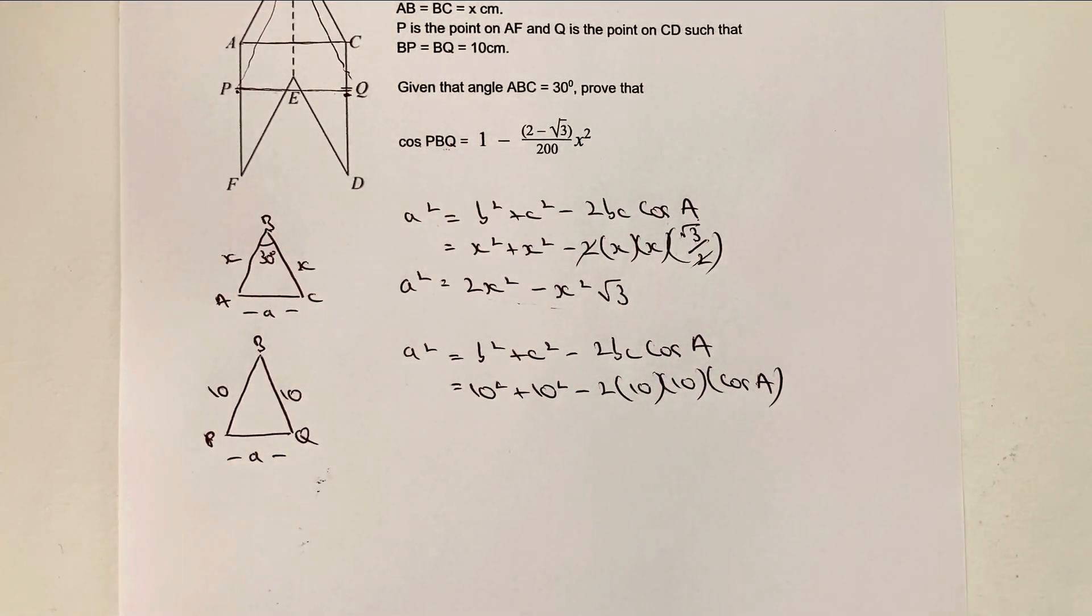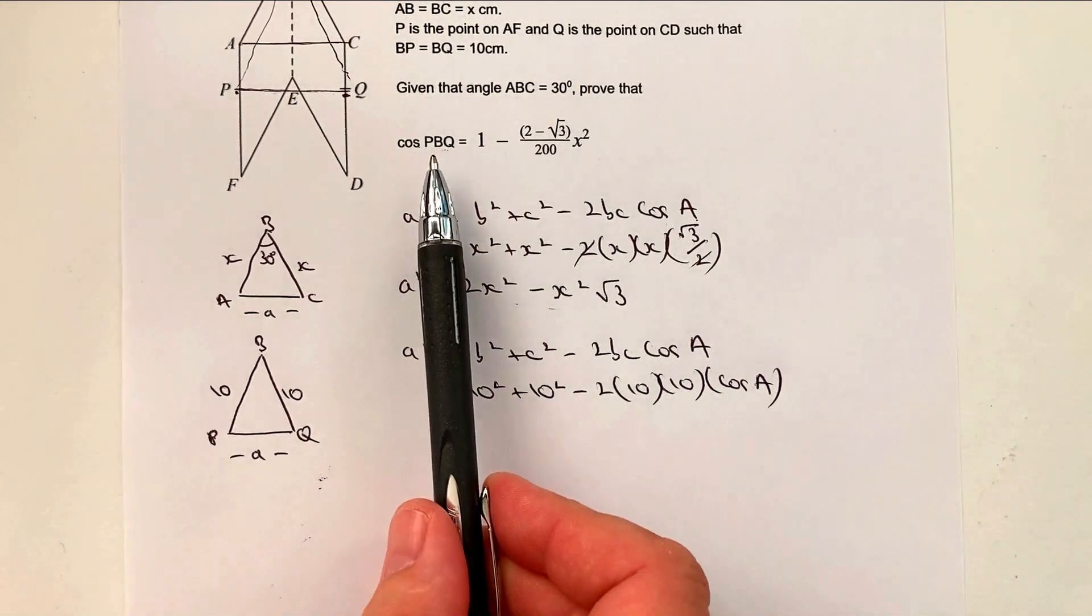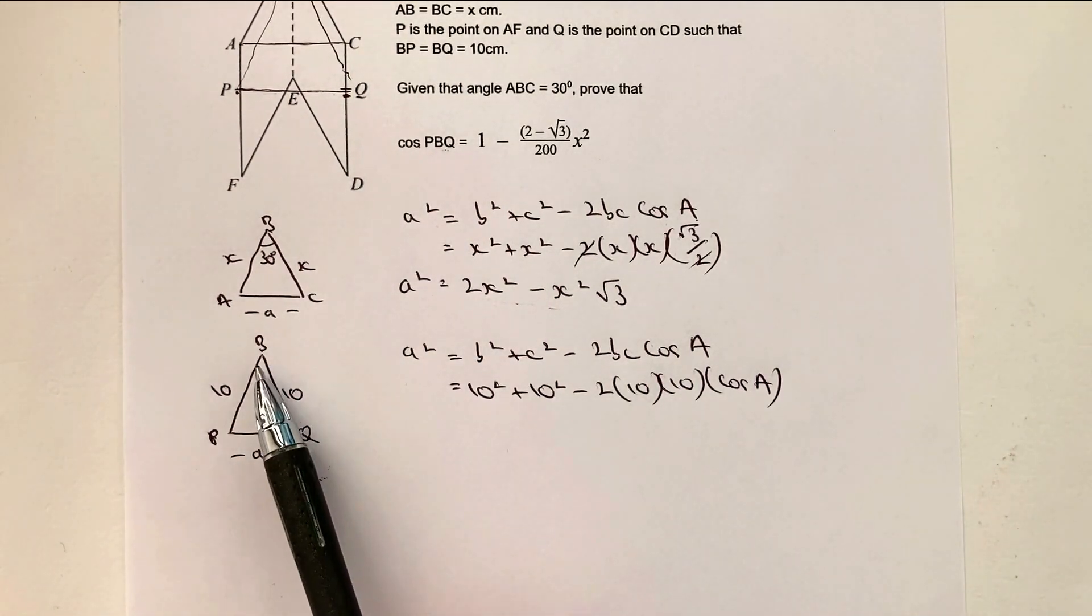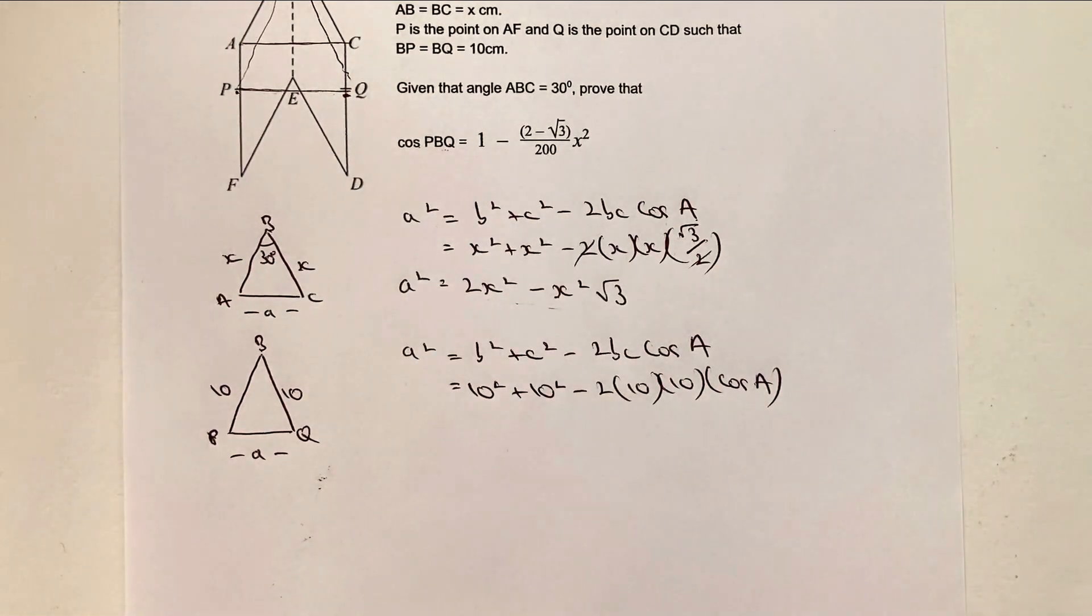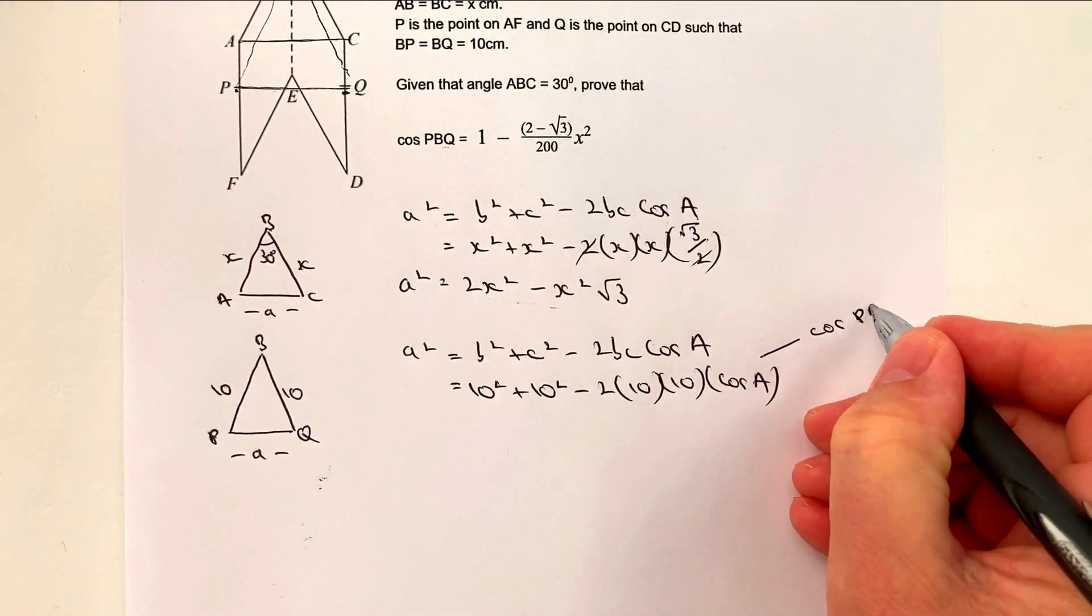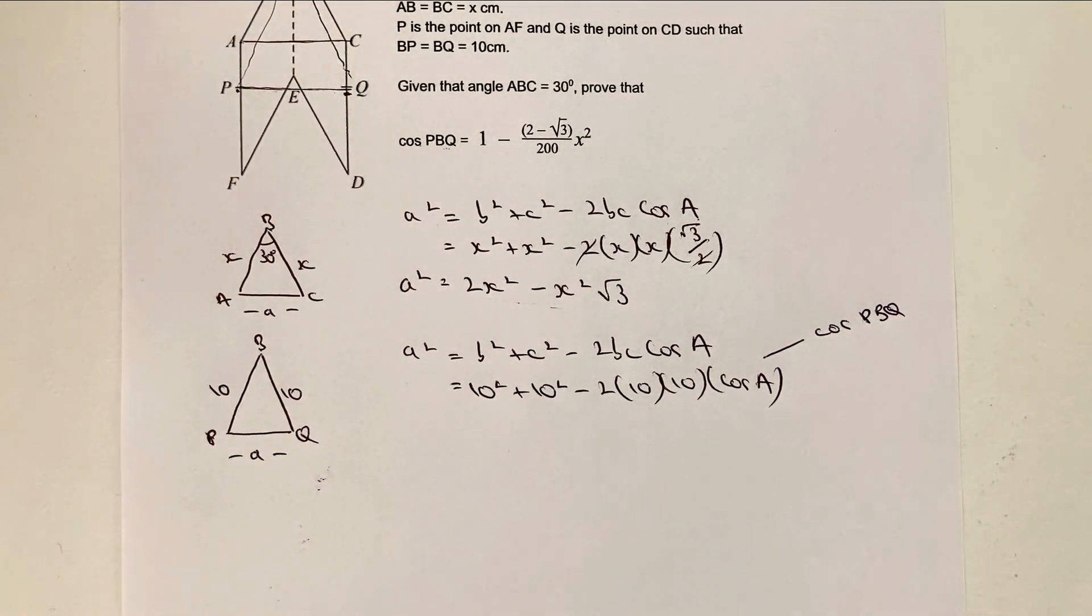So I actually have to write that as cosine A. But what I'm going to do is make a note because I'm going to use this a little bit later on is that cosine A is actually the same as cosine PBQ. It's PBQ. It's this angle here is the same. So this is going to be cosine PBQ. And you need to keep that in mind now, really, as we're working through this.